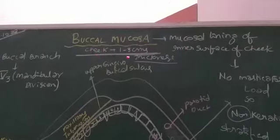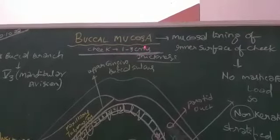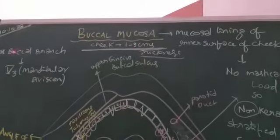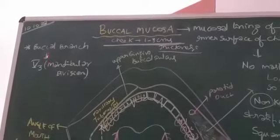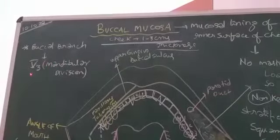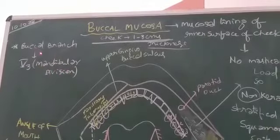What is the thickness of the cheek? 1 to 3 cm. What is the nerve supply of the cheek? It is supplied by buccal branch of mandibular division, that is V3, mandibular division, buccal branch of mandibular division.